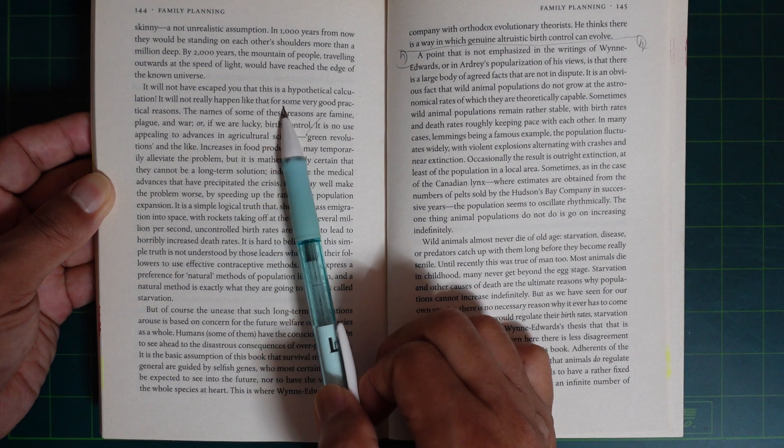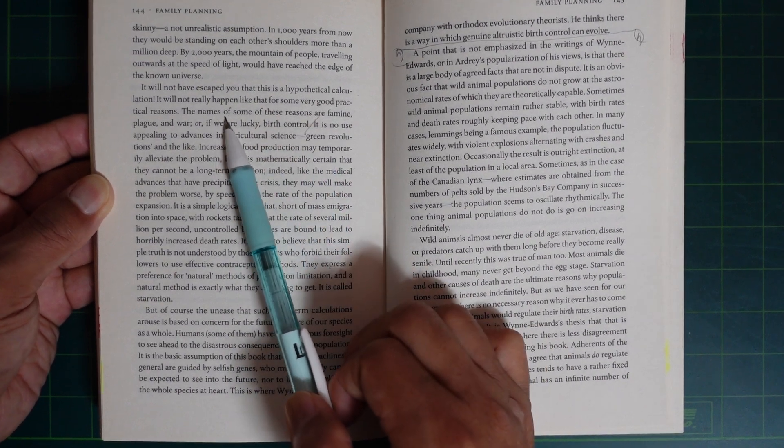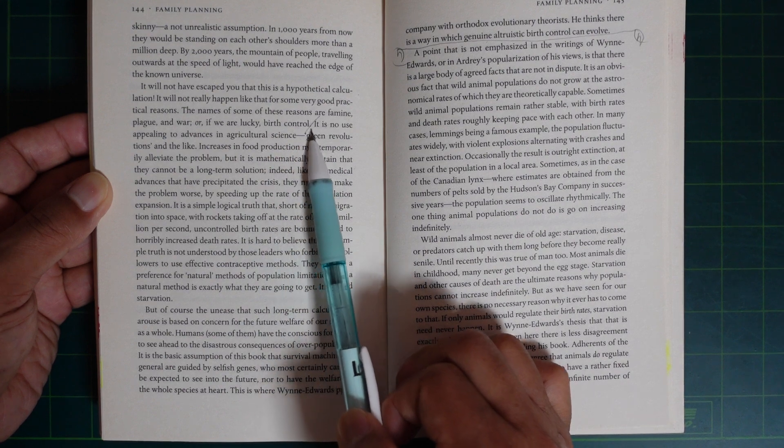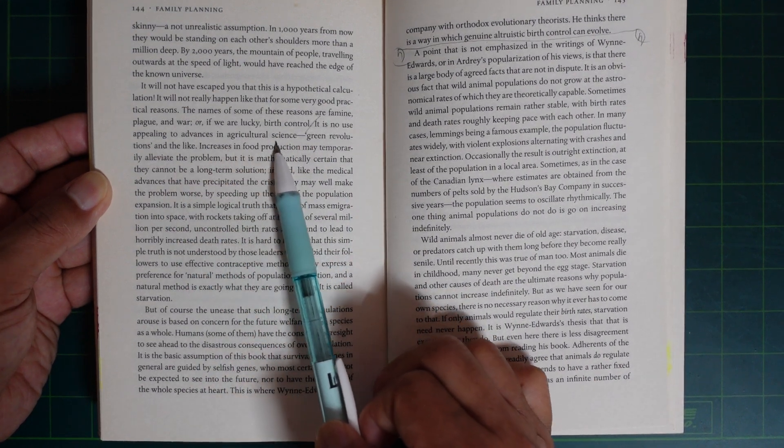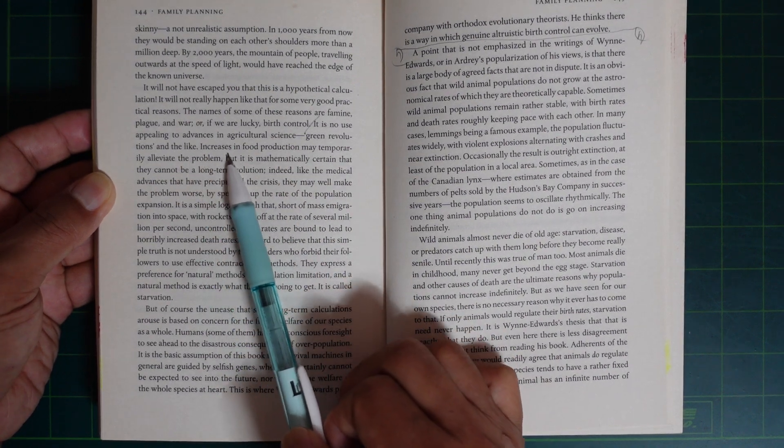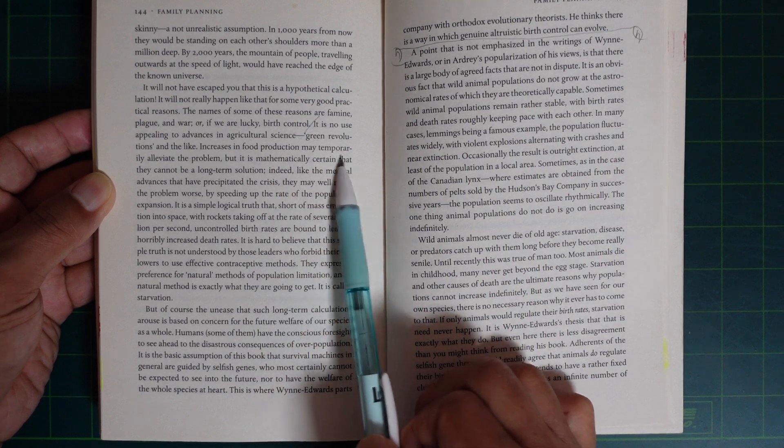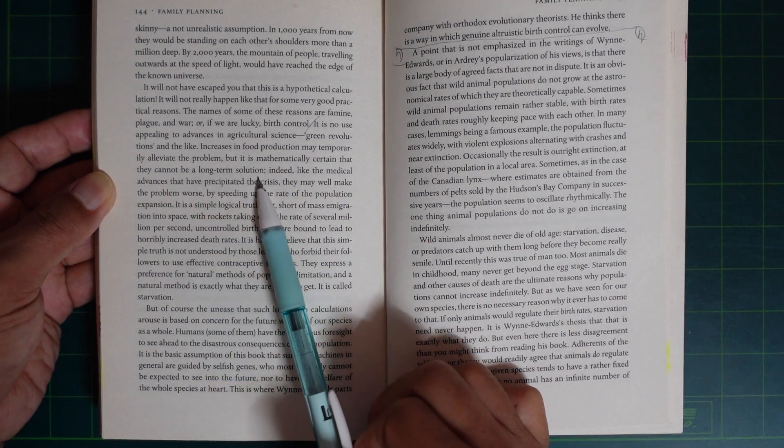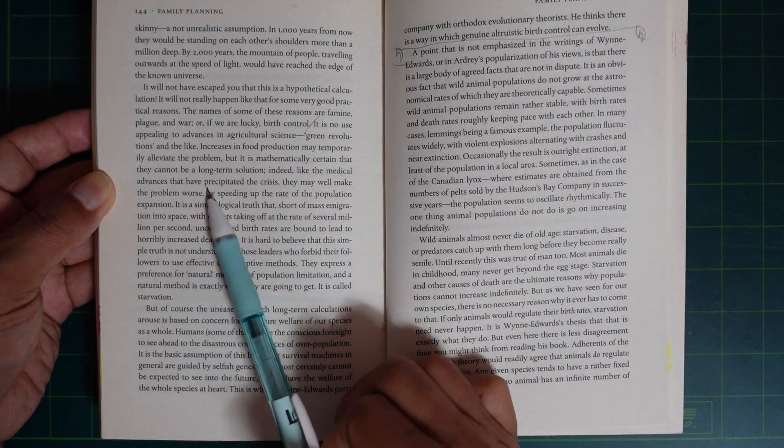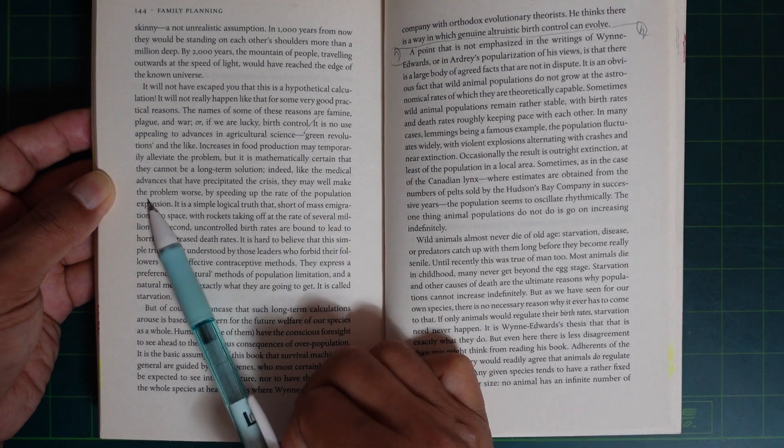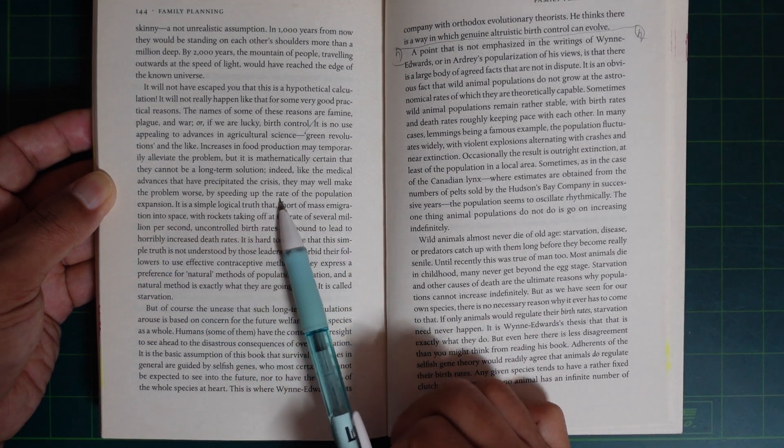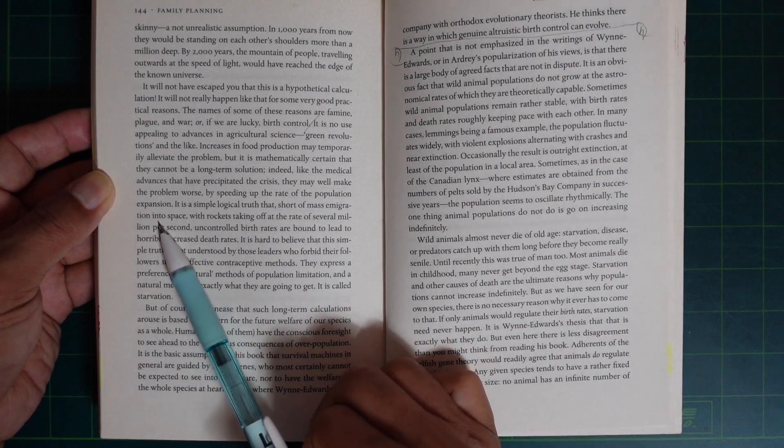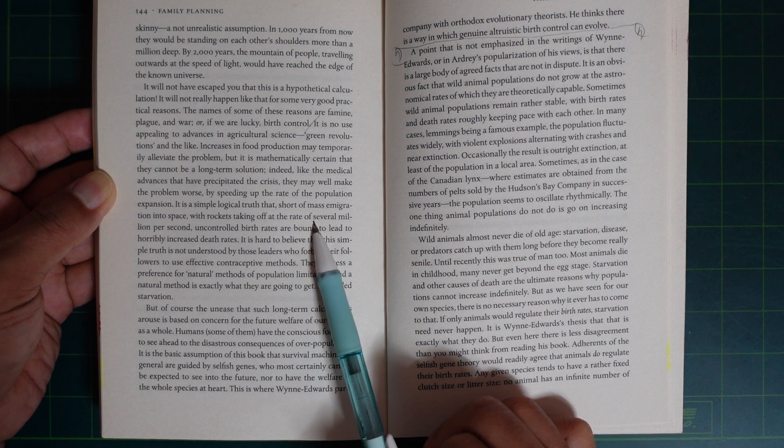It will not have escaped you that this is a hypothetical calculation. It will not really happen like that for some very practical reasons. The names of some of these reasons are famine, plague, and war, or if we are lucky, birth control. It is no use appealing to advances in agricultural science. Green revolution and the like increases in food production may temporarily alleviate the problem, but it is mathematically certain that they cannot be a long-term solution. Indeed, like the medical advances that have precipitated the crisis, they may well make the problem worse by speeding up the rate of the population expansion.